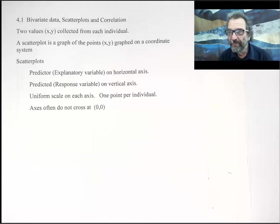Welcome to chapter 4. We're in section 4.1. Chapter 4 is about bivariate data, scatter plots, correlation, linear regression, describing two variable data sets. So for each individual we collect two values. That's called bivariate data.